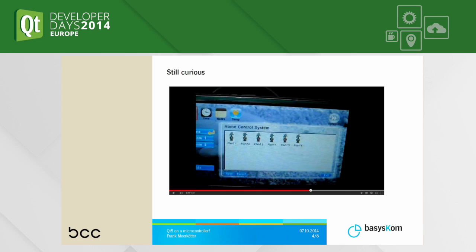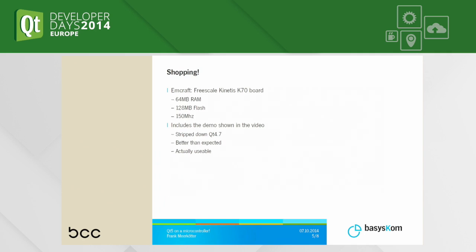We started to look around and concluded it might be possible to use Qt. Some of the vendors doing evaluation boards for these devices even had a video on their website supposedly running Qt 4.7, but the video wasn't really satisfying our curiosity — it was something like 30 seconds, very Blair Witch style: dark, shaky, and you don't gain much. So, shopping time. We went ahead and bought an EVO board. The manufacturer is EMCraft, the CPU is a Freescale Kinetis K70, set up with 64 megabytes of RAM, a bit of flash, and clocked at 150 megahertz.